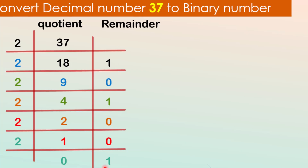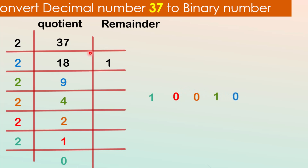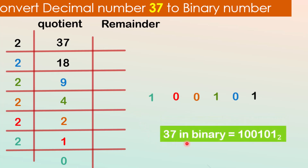Now, we read the remainders from bottom to top: 1, 0, 0, 1, 0, 1. So, the binary equivalent of 37 is 100101.